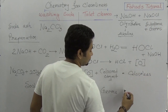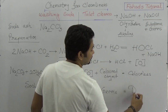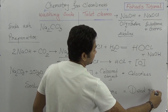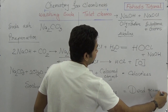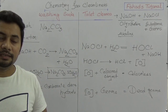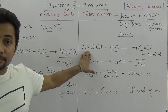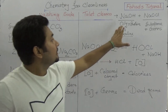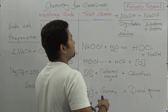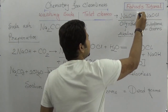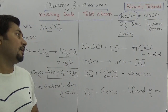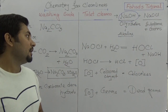When nascent oxygen mixes with germs, the germs are killed. So we can say that sodium hypochlorite and sodium hydroxide are the main ingredients of toilet cleaner. Sodium hydroxide is the primary ingredient, but sodium hypochlorite also plays an important part in this cleaning action.